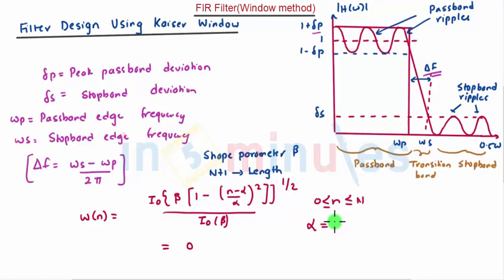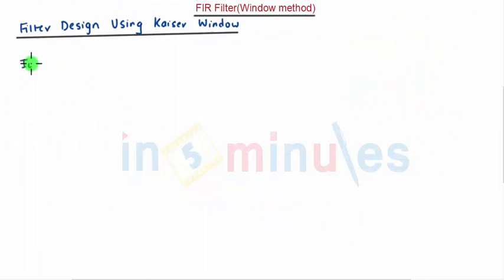Here alpha equals n by 2, and i0 is the zeroth order modified Bessel function of first kind. i0 of x is given as 1 plus (0.25 x squared over 1 factorial) squared plus (0.25 x squared over 2 factorial) squared, and it goes on.